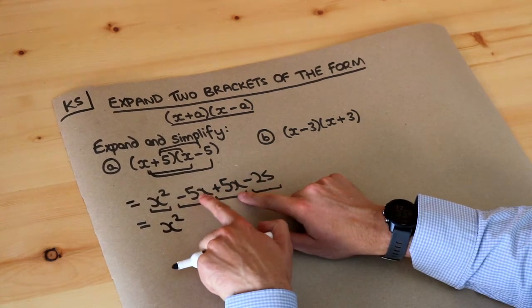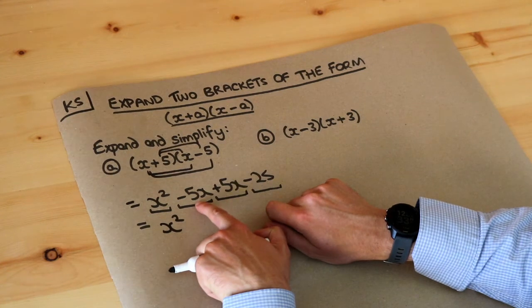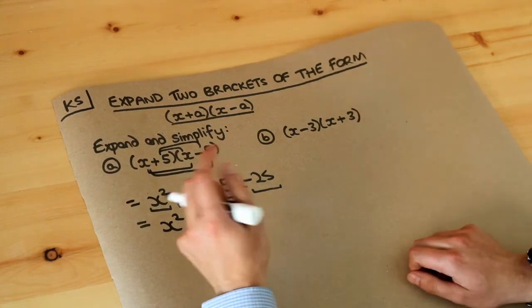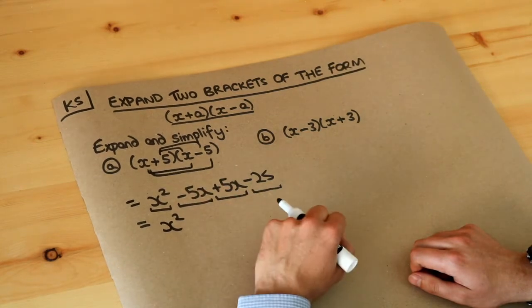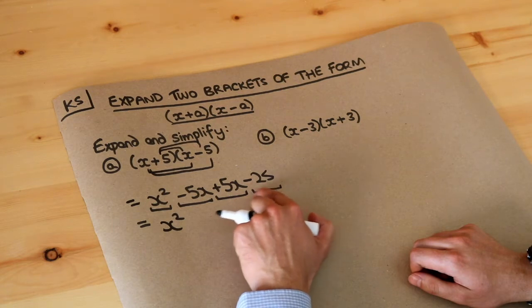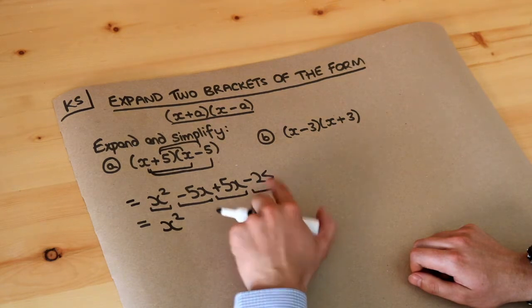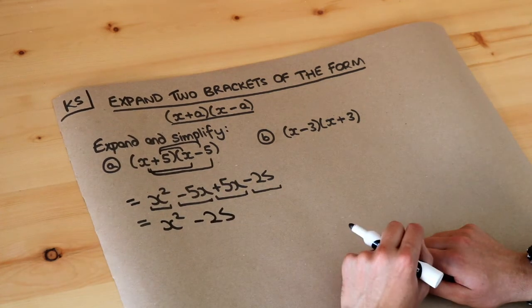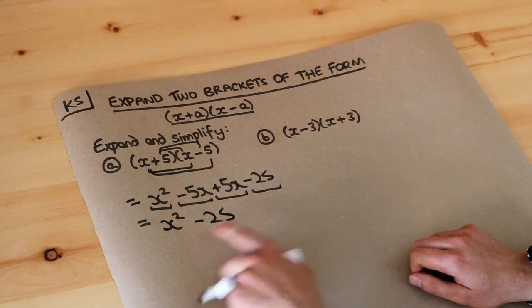Now what's -5 lots of x plus 5 lots of x? Well -5 + 5 is 0, so these actually cancel each other out and we're left with nothing there. And then we've got this constant term here - a constant term is just a term without a variable - and we've got the -25. So we end up with something like this where the x term disappears but we still got the x² term and this non-x term, the constant term.